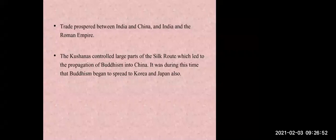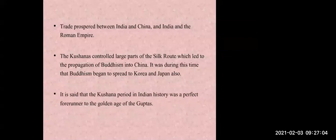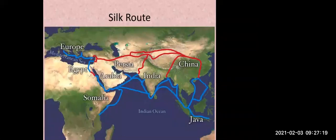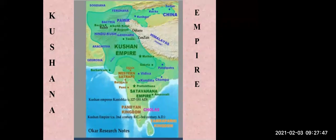It was during this time that Buddhism began to spread to Korea and Japan as well — because of trade, Buddhism also spread to Korea and Japan. It is said that the Kushana period in history was a perfect forerunner to the golden age of the Guptas. The red-marked line on the map shows the Silk Route used for trade to connect different countries, and the green-shaded part shows the Kushana Empire.